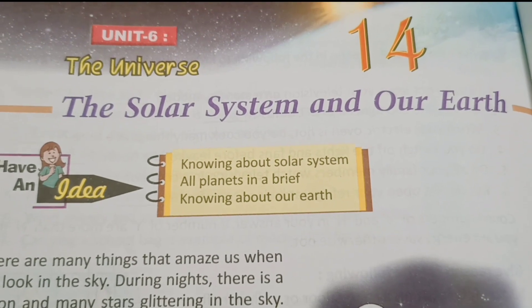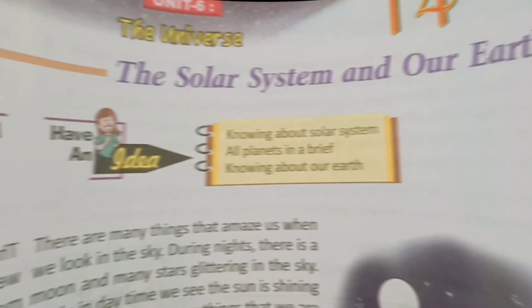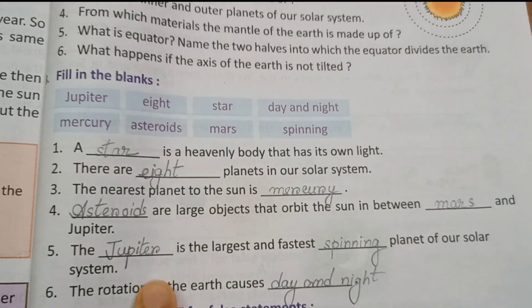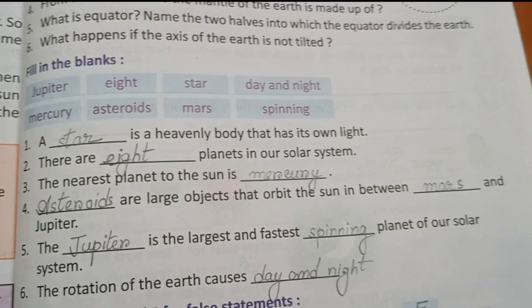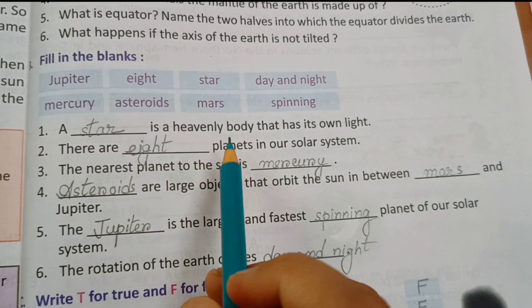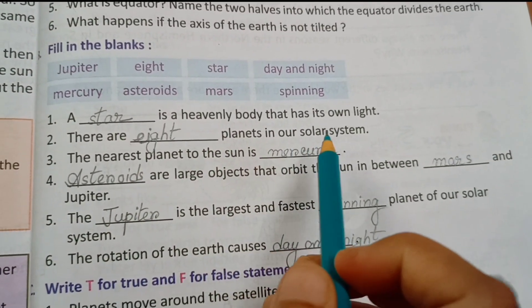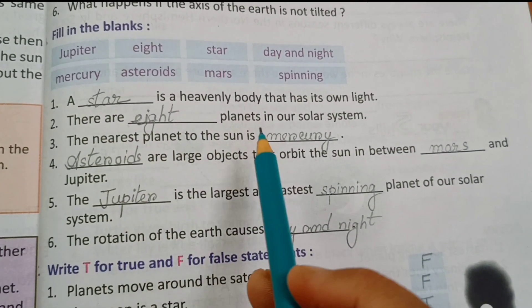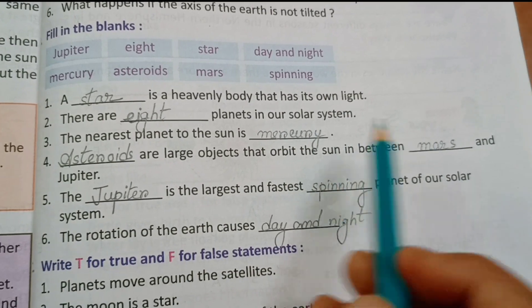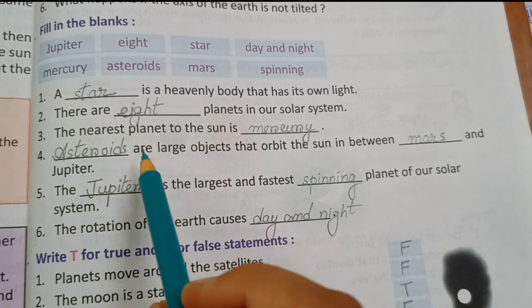Let's start the chapter: The Solar System and Our Earth. First we will solve the objectives, then we will solve the question answer part. Section B: Fill in the blanks. Number one: A star is a heavenly body that has its own light. Number two: There are eight planets in our solar system.